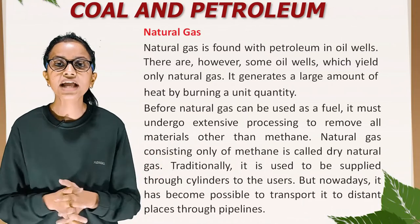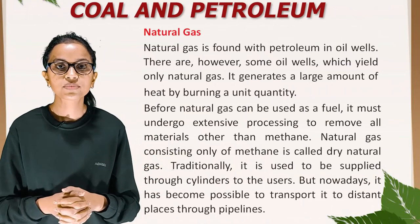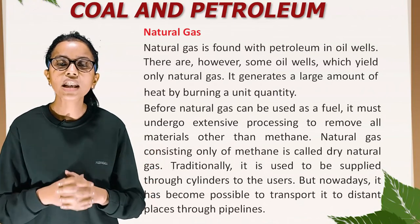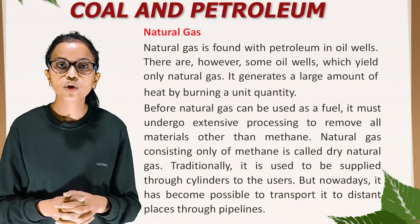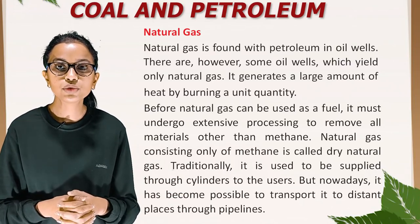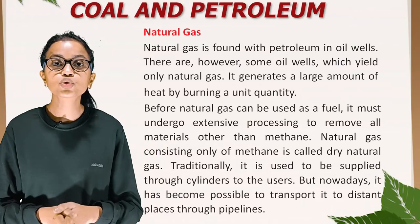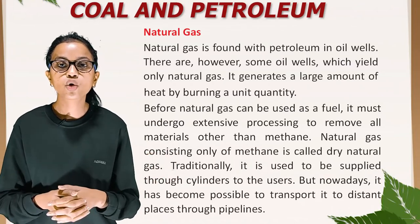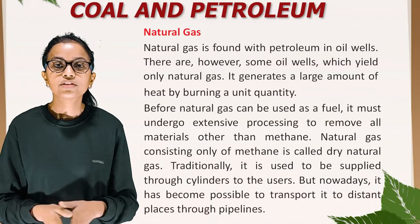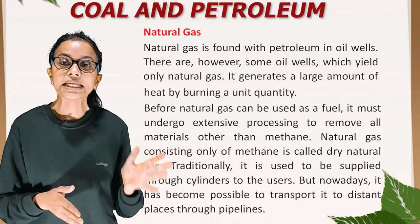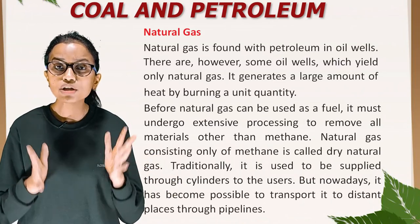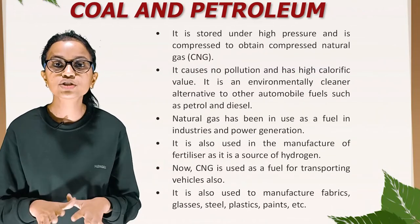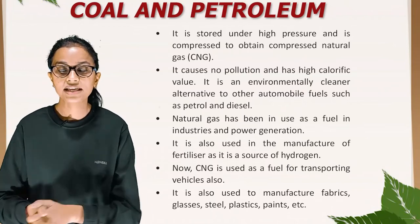Natural gas: Natural gas is found with petroleum in oil wells, though some oil wells yield only natural gas. It generates a large amount of heat by burning a unit quantity. Before natural gas can be used as a fuel, it must undergo extensive processing to remove all materials other than methane. Natural gas consisting only of methane is called dry natural gas. Traditionally it was supplied through cylinders, but nowadays it can be transported to distant places through pipelines. It is stored under high pressure and compressed to obtain compressed natural gas, i.e. CNG.